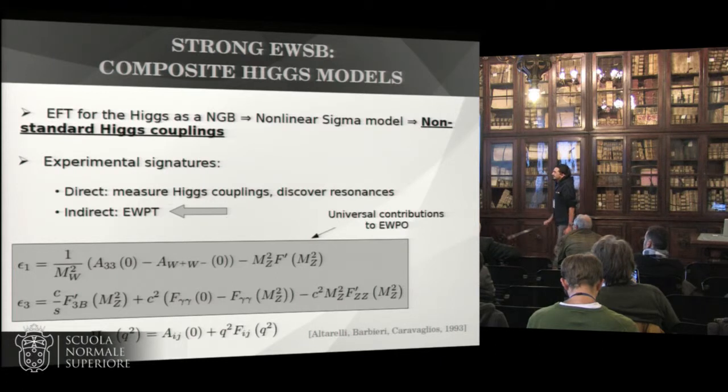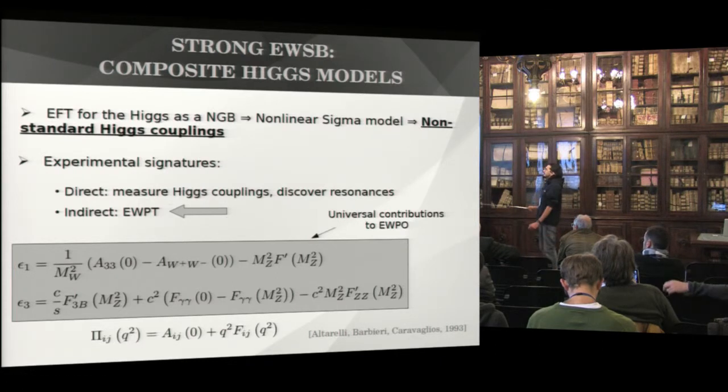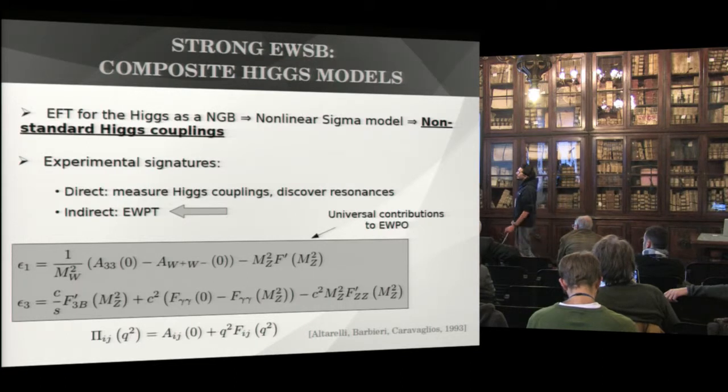As I said, we have to build some effective field theory for the Higgs as a Goldstone boson, so the Higgs-Lagrangian will be non-standard, so the Higgs couplings will be non-standard. Among the experimental signatures of such a class of models, we will have some direct signatures, for example measure the Higgs couplings and discover resonances, but also indirect signatures like electroweak precision tests.